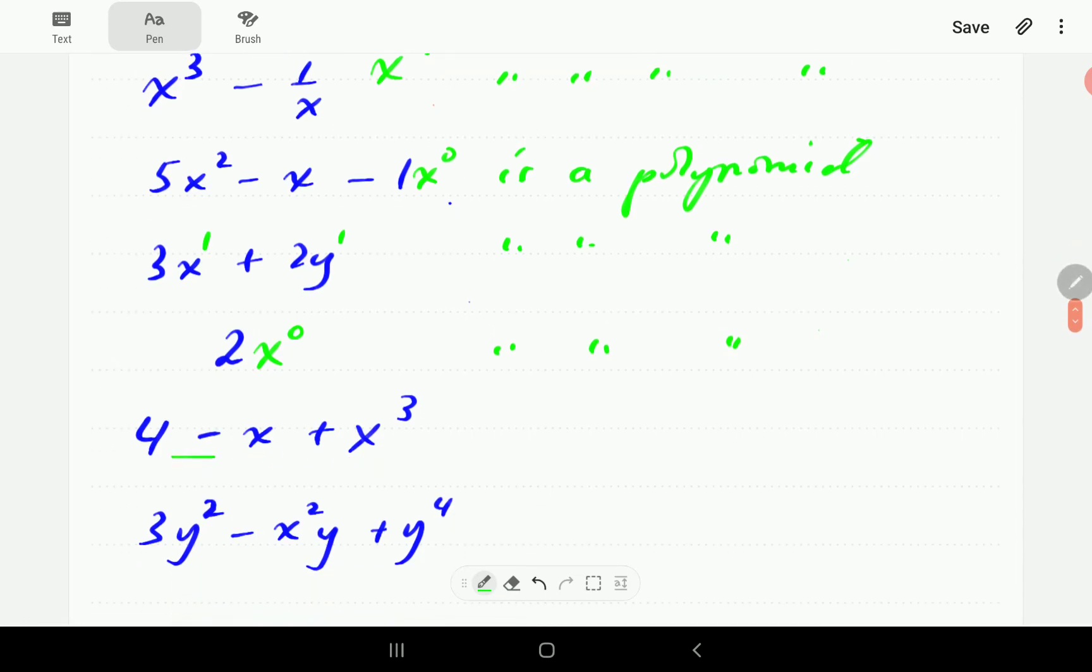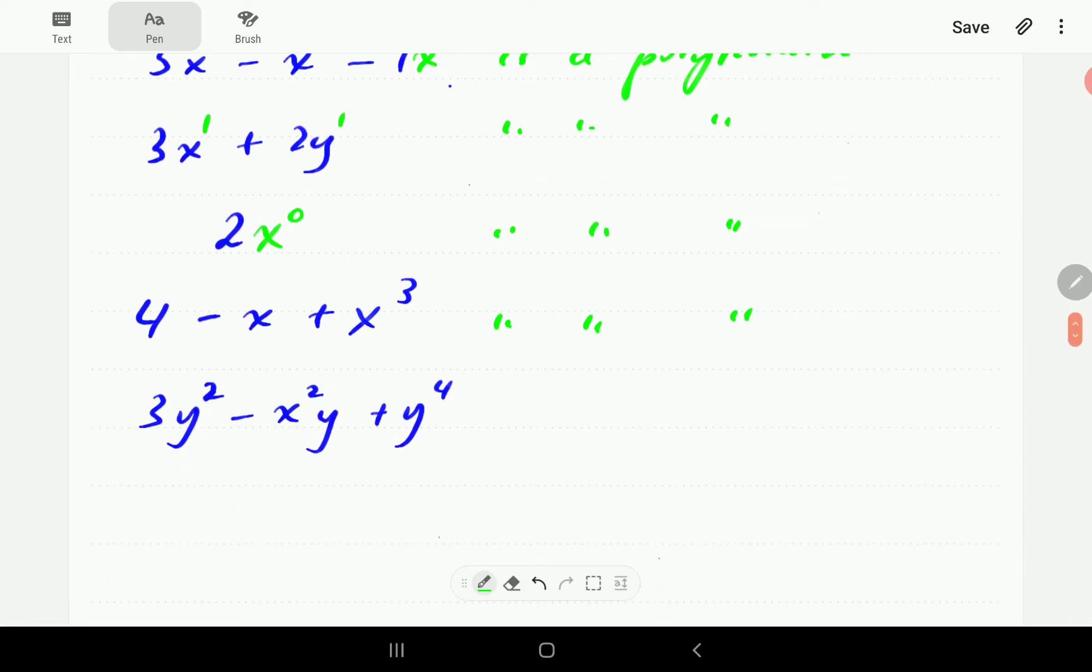This next one is also a polynomial, because we've got power 3 here, power 1, and power 0 here. So it is a polynomial. And the last one we have here is also a polynomial.